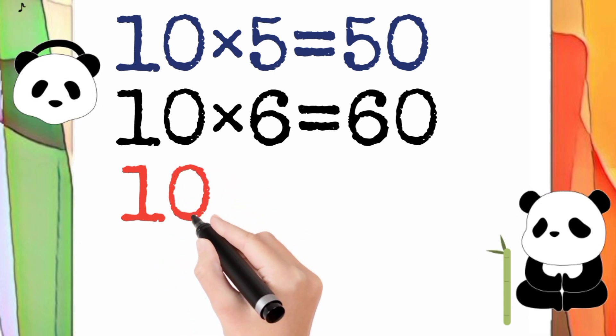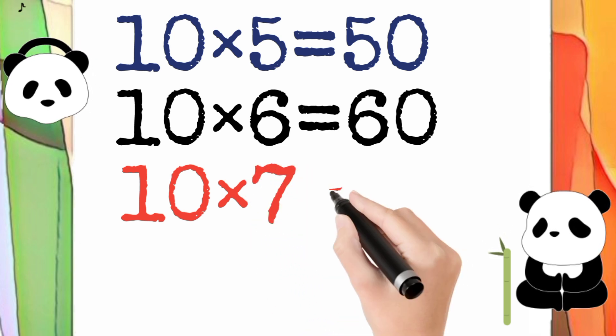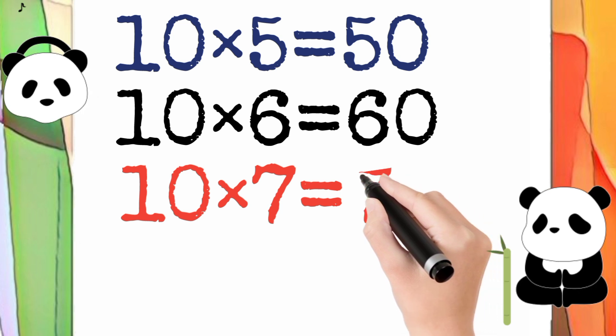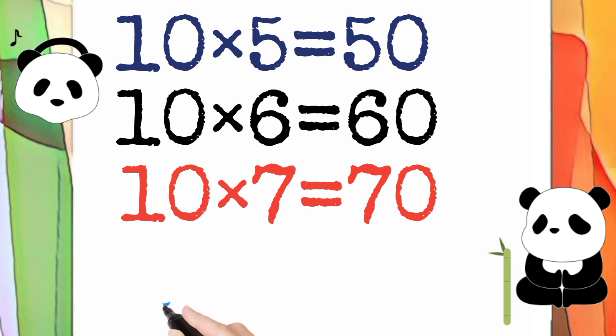10 multiply by 7 is equal to 70. So 10 times 7 equals 70.